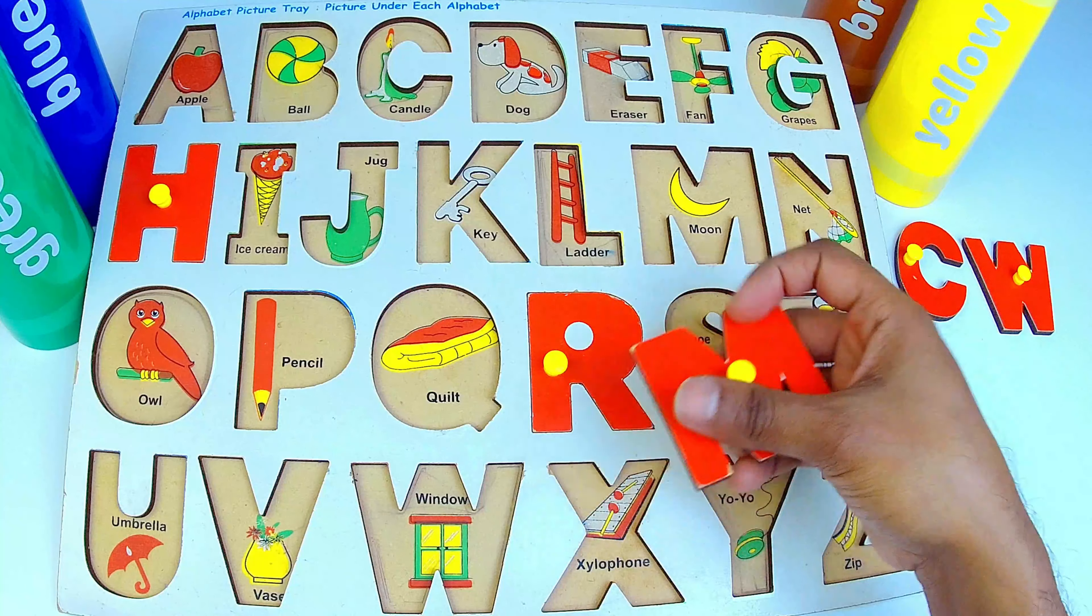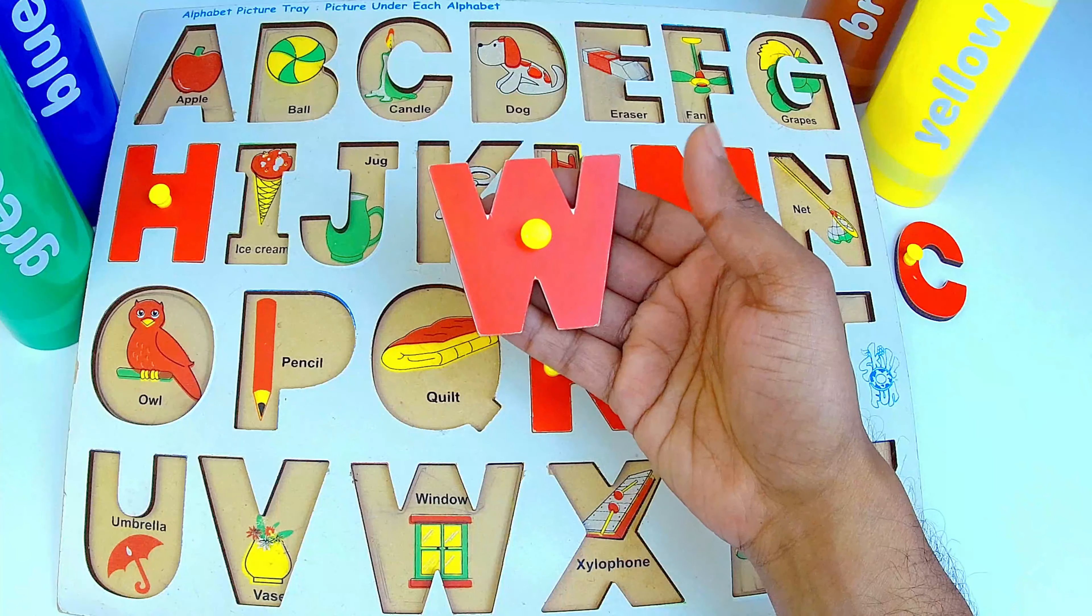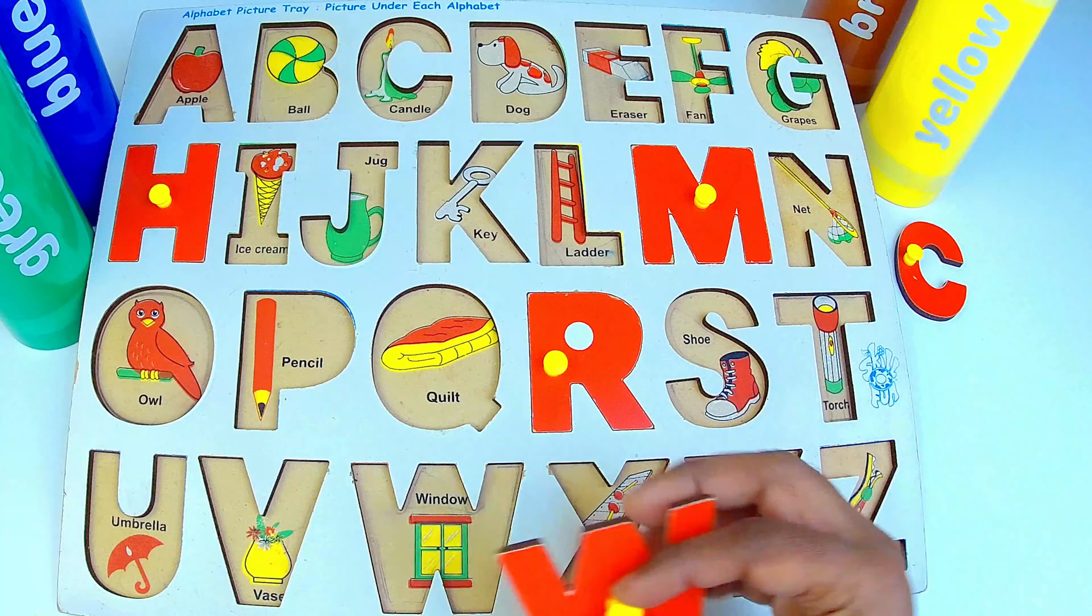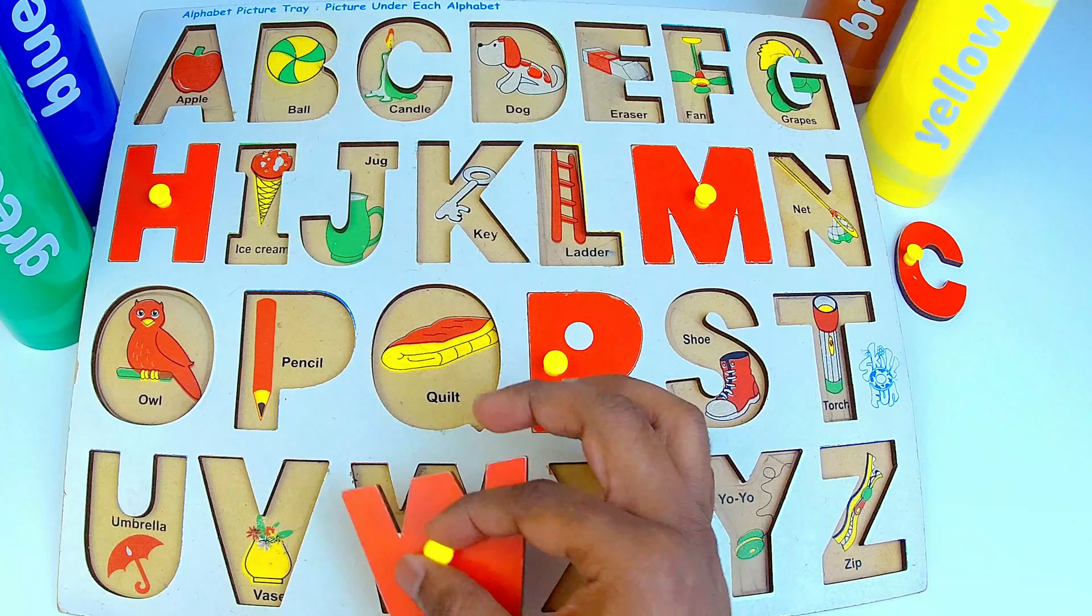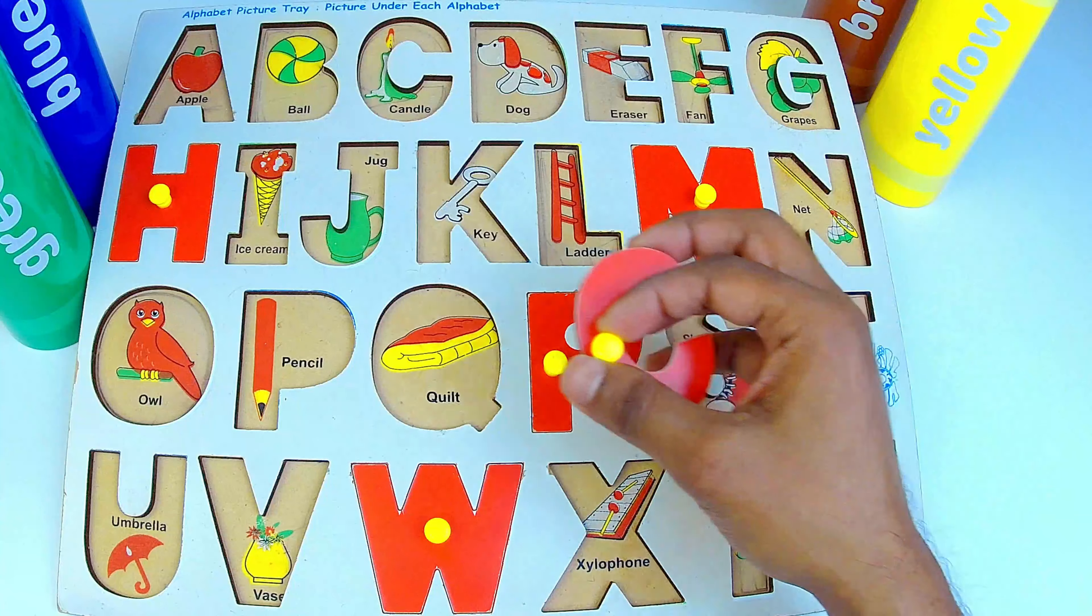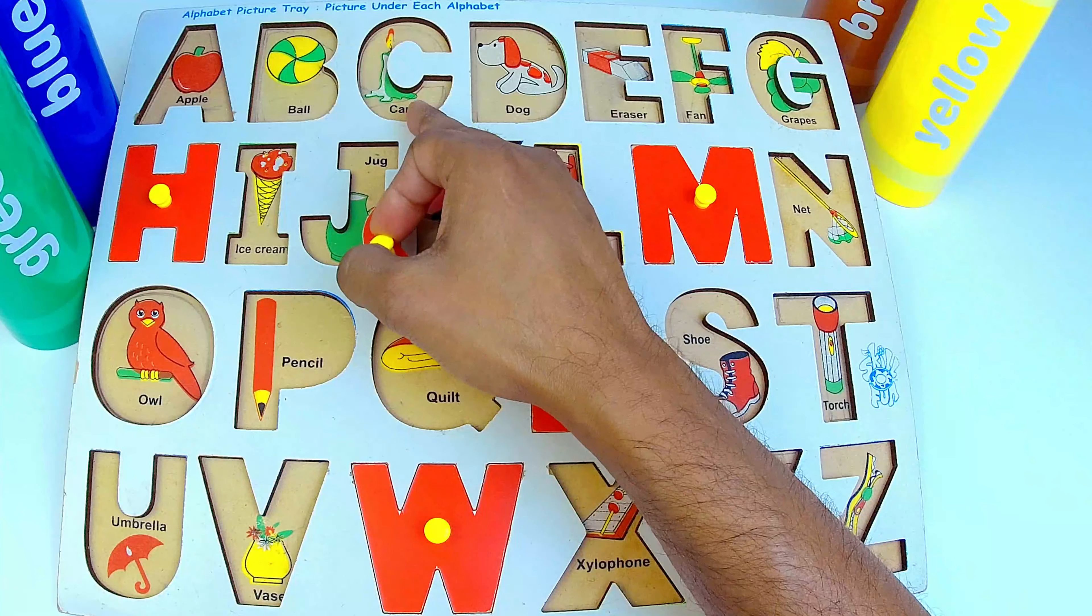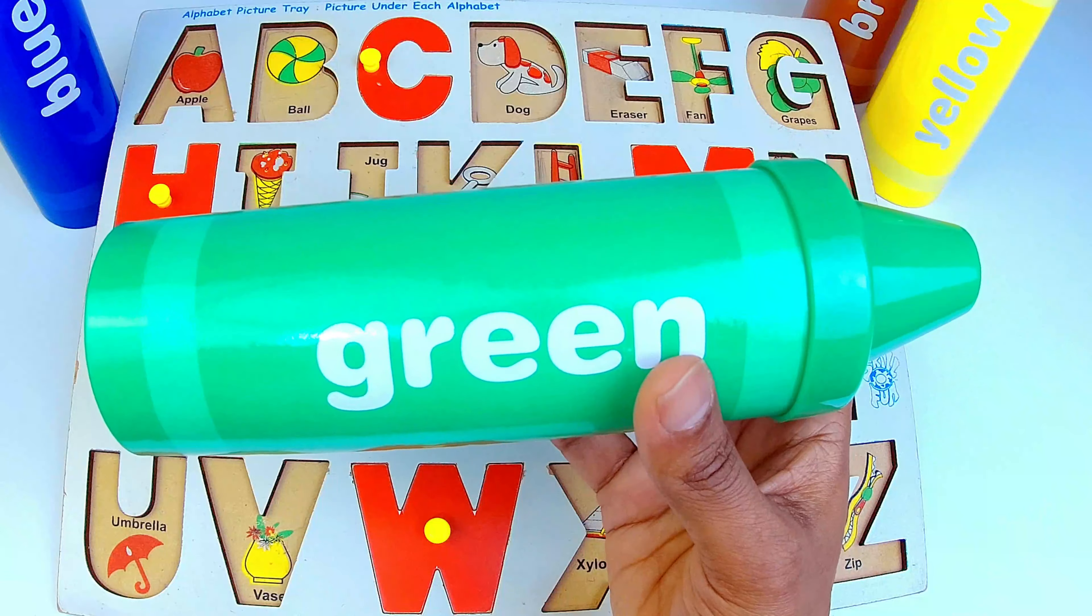M for moon, W for window, C for candle, green color.